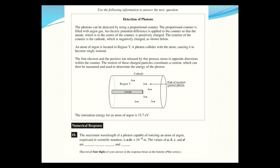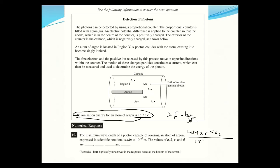This question has a lot of reading, but all we need is the ionization energy. We want the maximum wavelength of a photon capable of ionizing the atom, using E = hc/λ, solved for λ. Using 4.14 × 10⁻¹⁵ × (3 × 10⁸) divided by 15.7 eV, we get 7.91 × 10⁻⁸ meters — that's the correct answer.